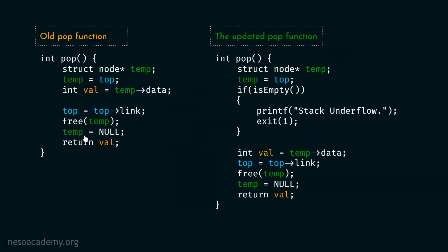This is the old pop function and this is our updated pop function. Here I have added this piece of code: if isEmpty, print stack underflow and exit with exit failure status. This is an abnormal termination — if stack is empty, then we must print stack underflow and exit from the program immediately, because we are trying to pop elements out of a stack. The updated pop function is obviously better than the old one.